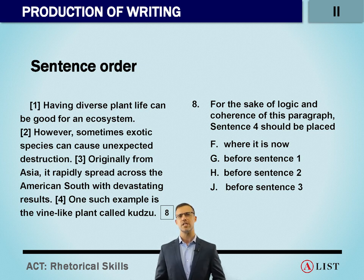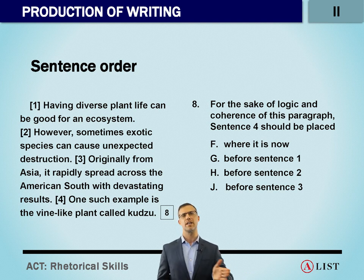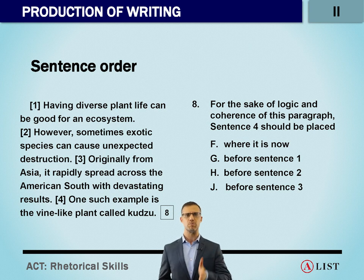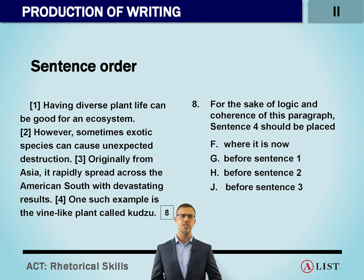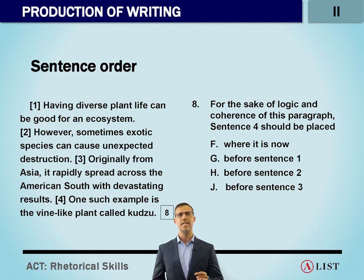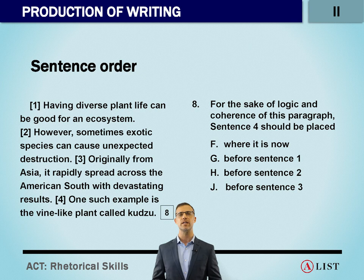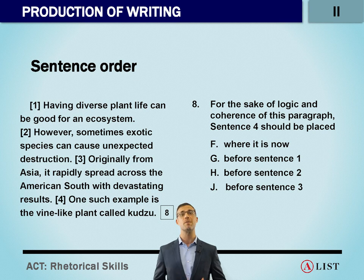Number one: look for a sequence in terms of action or chronological order. It's also possible you need to look at verb tense — something in the past, present, or future. It's also conceivable that transition words can help, since they need to appear in a place that logically connects the sentence before and the sentence after — a contrast word like 'however' or 'additionally' can be a huge help. Finally, look at pronouns — you can't use a pronoun unless you've established its antecedent.